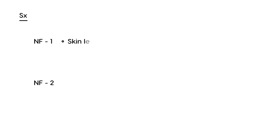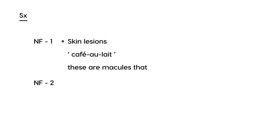On licensing exams, the most common symptoms shown for neurofibromatosis type 1 are the skin lesions. A very key term to remember is 'café au lait' spots — these are brown, medium-brown colored macules that can appear on the body, usually on the trunk or many other places.